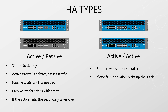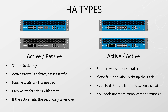If one of these firewalls fails, then the other one takes on the extra traffic. Keep in mind that a single firewall needs to be powerful enough to handle all the traffic if a failure like this happens. Active-active is a bit more complicated to set up, as you need to think about how traffic is distributed between the pair and how NAT pools are managed on each device. We'll talk more about this and other active-active considerations at the end of the video.